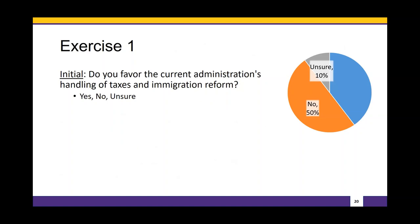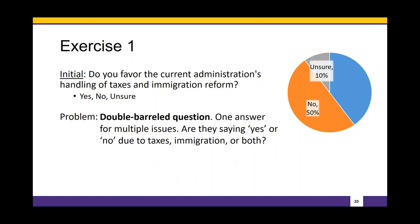Let's go through a few exercises to demonstrate these points. Exercise one: 'Do you favor the current administration's handling of taxes and immigration reform? Yes, no, or unsure.' What's the problem? It's a double-barreled question — one answer for multiple issues. Are they saying yes or no to taxes, immigration, or both? We can't really understand what the data is telling us.